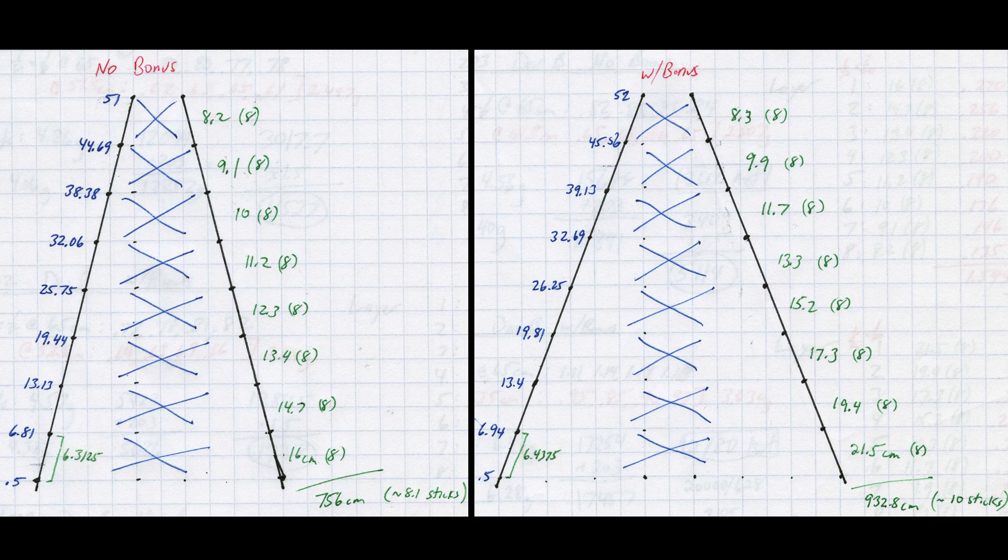Next, I will mark all four legs at every spot a cross member will be attached. Now we need to know the length of every cross member piece. Again, the easiest way to figure this out is to just measure it with a ruler by taping the legs into place on the jig. All of those measurements are shown in green here and you can see that for each layer we'll need 8 pieces, 2 for each X times 4 sides.